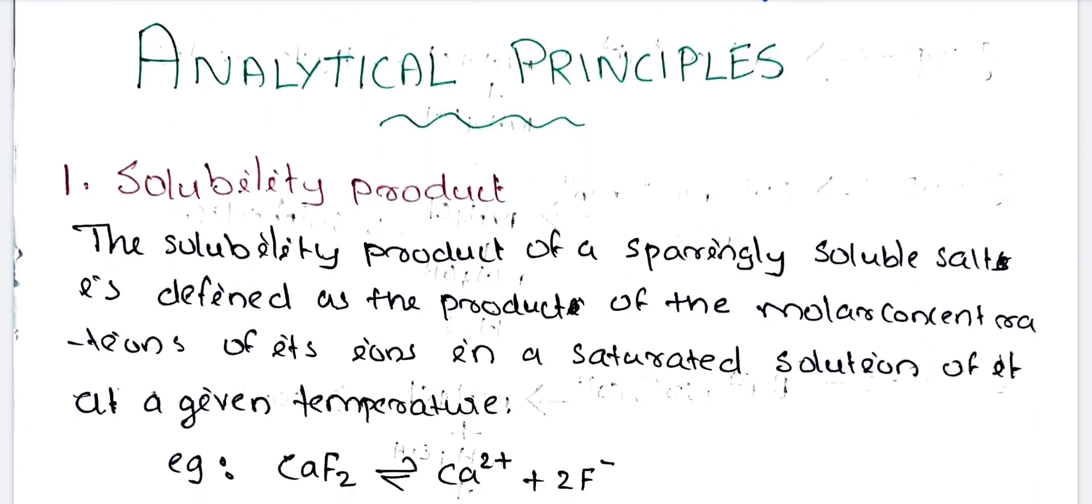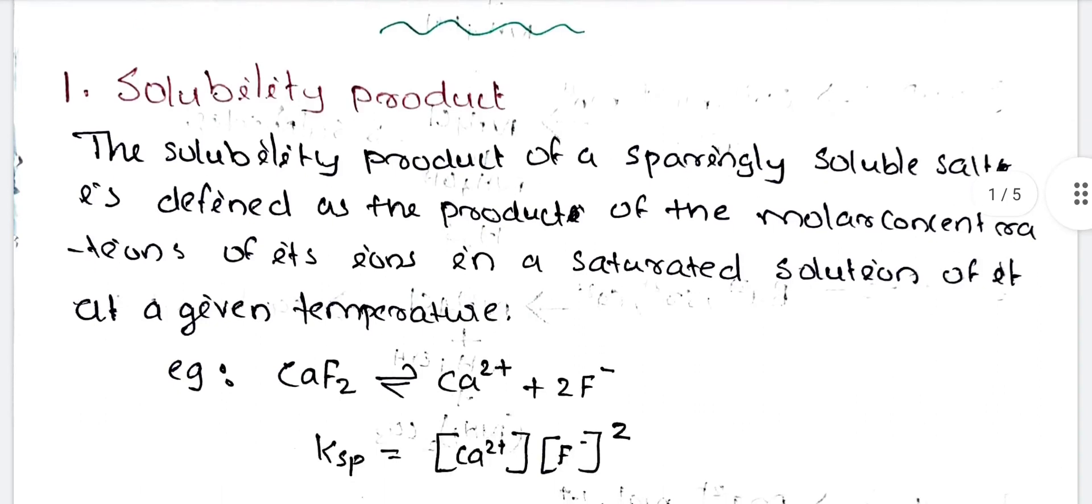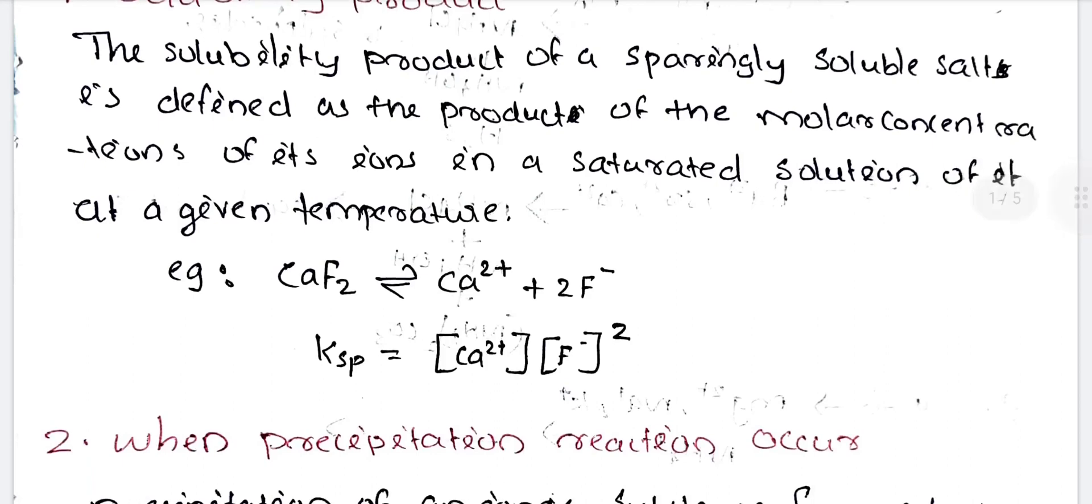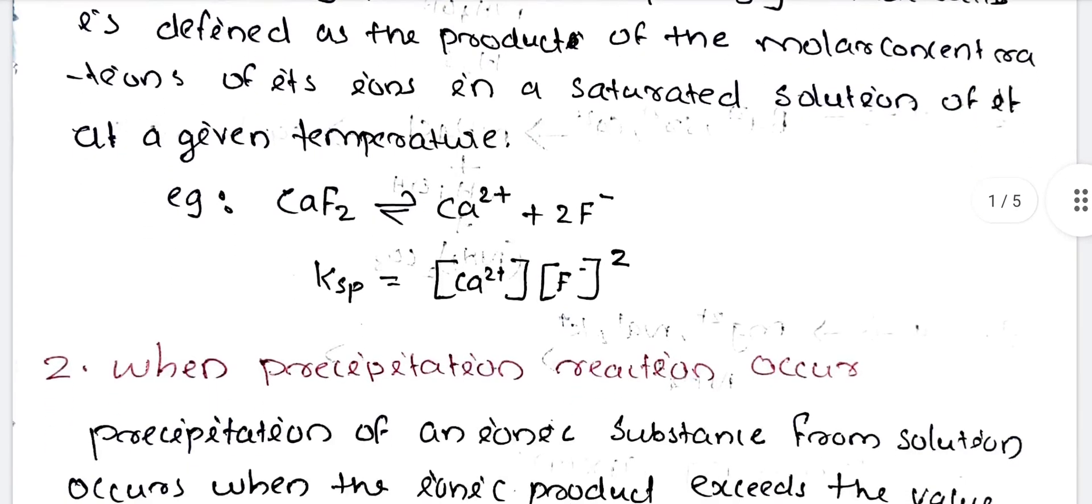The first one is the solubility product. The solubility product of a sparingly soluble salt is defined as the product of molar concentration of its ions in saturated solution at a given temperature. For example, CaF2 dissociates, and the solubility product is the product of molar concentration of the ions.